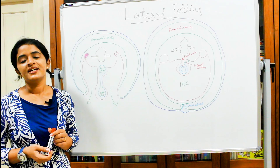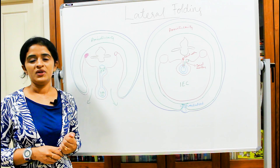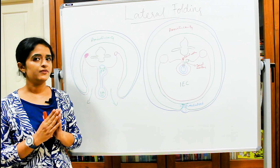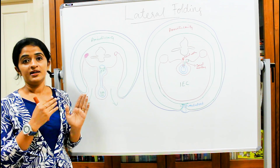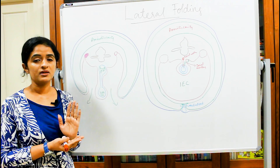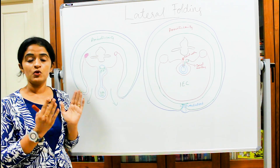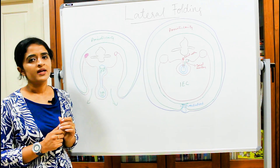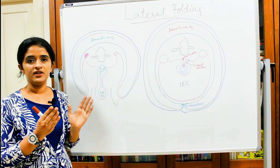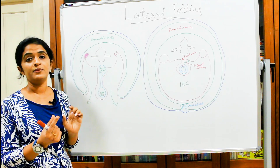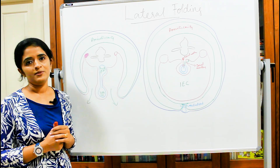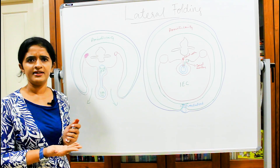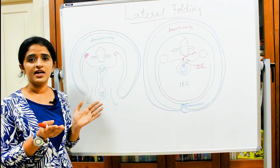Welcome back. In this session we are continuing with the development of the gastrointestinal system. In the last session we saw how head folding and tail folding occurs, and how a major portion of the yolk sac gets incorporated into the embryo — giving us the entire primitive gut within the embryo, divided into foregut, midgut, and hindgut.